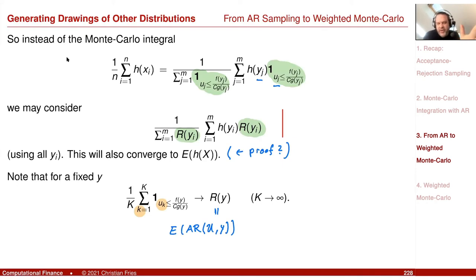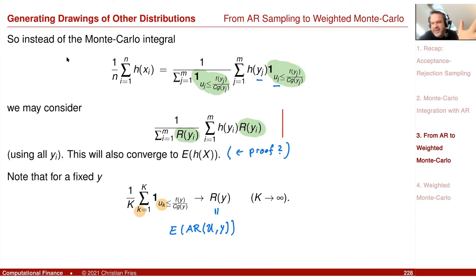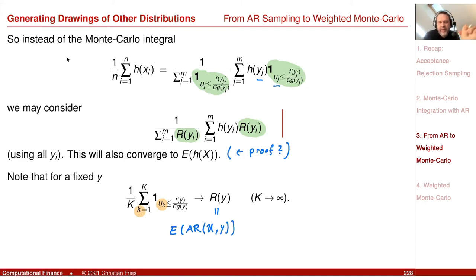This is different from before: here I take every point — I'm not rejecting points, just using a different weight. The reason is that I'm not interested in the sequence; I'm interested in the sum. If you want a sequence, you cannot say a point is only there 90% of the time. But if I'm interested in the Monte Carlo integral or the sum, I can use all the points with this weight.